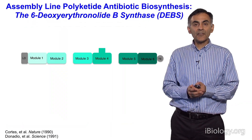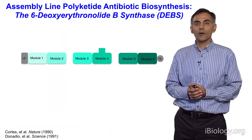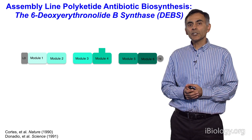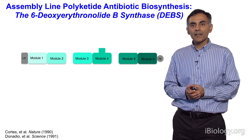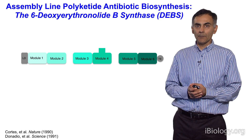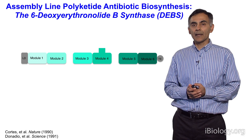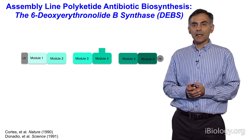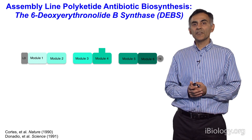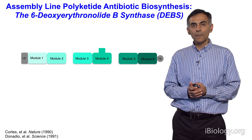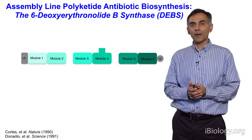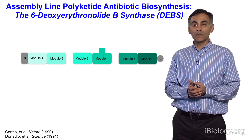Now, nature has come up with a very similar strategy to make a class of antibiotics called the polyketide antibiotics. What I show you in this simple cartoon is a prototypical example of an assembly line that's made up of a bunch of enzymes and is responsible for making a key intermediate in the biosynthesis of the well-known antibiotic erythromycin. This intermediate is called 6-deoxyerythronolide B, and the assembly line that makes it is called the 6-deoxyerythronolide B synthase, or DEBS for short.